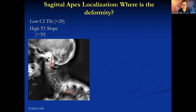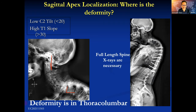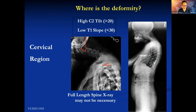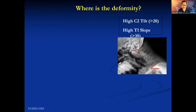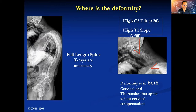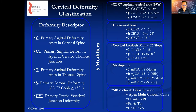Here's a quick way to localize the apex of these deformities. When you have a low C2 tilt and a high T1 slope, that implies the apex is in the thoracolumbar spine. When you have a low T1 slope and a high C2 slope, that implies the apex is in the cervical spine — maybe an isolated cervical deformity. But life is more complicated. Many patients have higher T1 slopes and higher C2 slopes, and sometimes they have a mixed deformity pattern, which is also important to recognize.